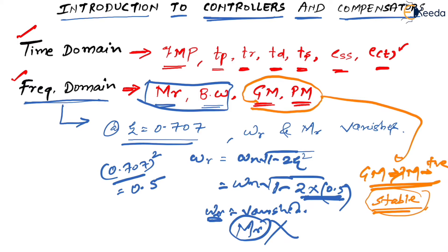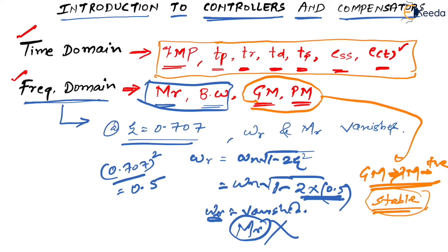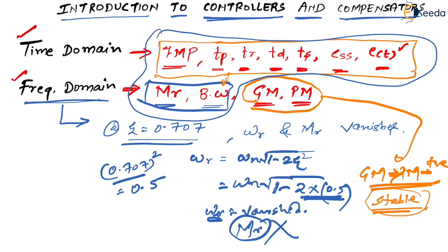In our last session we discussed that all time domain parameters — percentage MP, Tp, Tr, Td, Ts, E of T — and MR and bandwidth are interrelated with each other. However, GM and PM are not interrelated with these time domain parameters; they do not hold any relation with them.